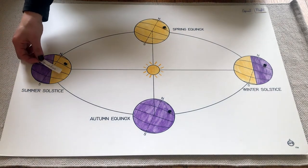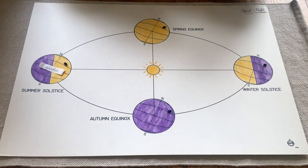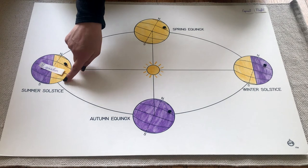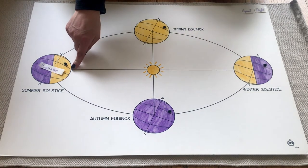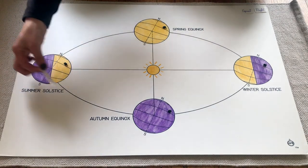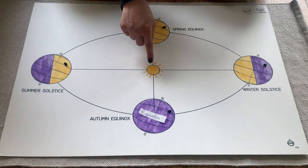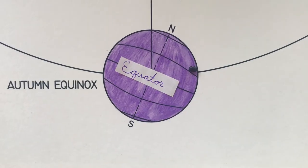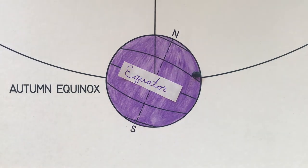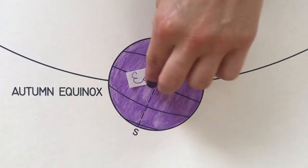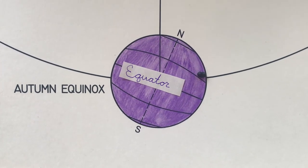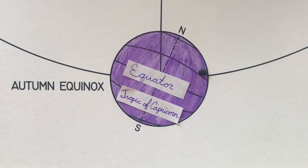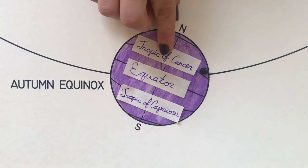Going around again to summer, we place our equator card and look at the sun's rays. Now we have something completely different — the sun's rays are not hitting on the equator, and they're not even hitting below it. They're actually hitting above it, here in the northern hemisphere. Moving back around to our autumn equinox, we see that the sun's rays are hitting exactly along the equator once again. Let's zoom in for a closer look: the line directly below the equator where the sun's rays hit during the winter solstice is called the Tropic of Capricorn. The line directly above the equator where the sun's rays hit during the summer solstice is called the Tropic of Cancer.